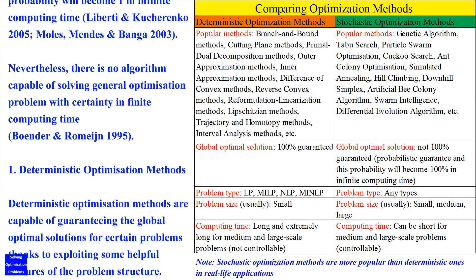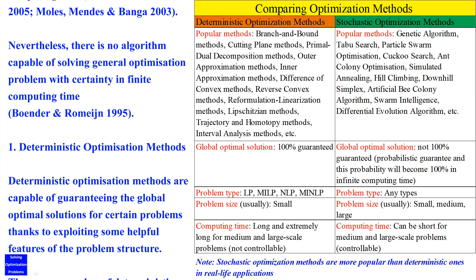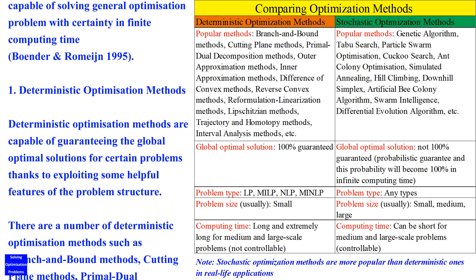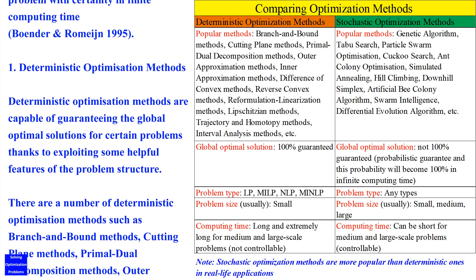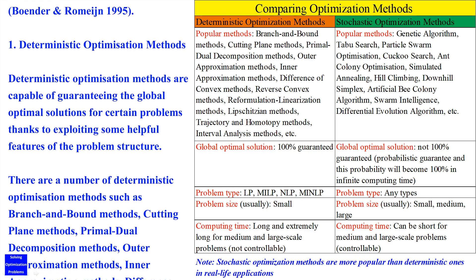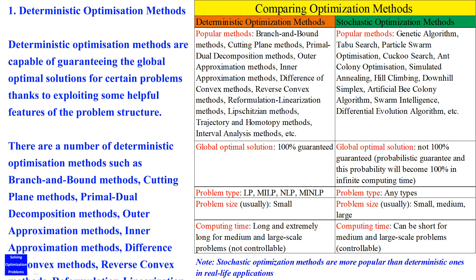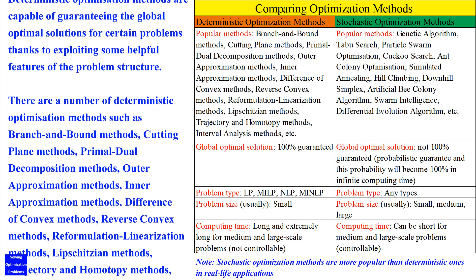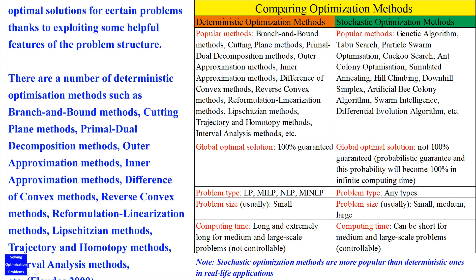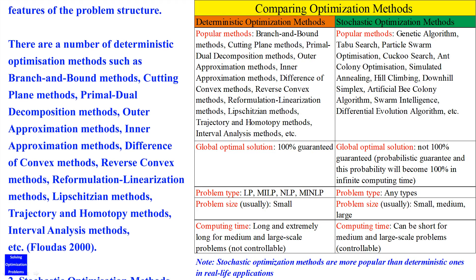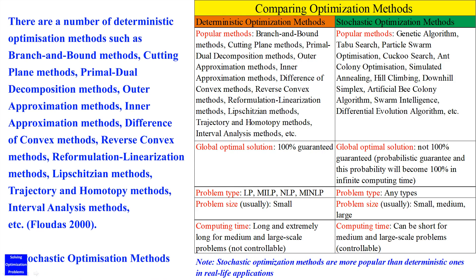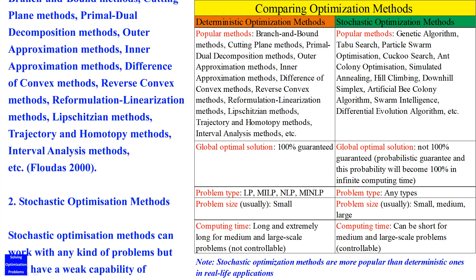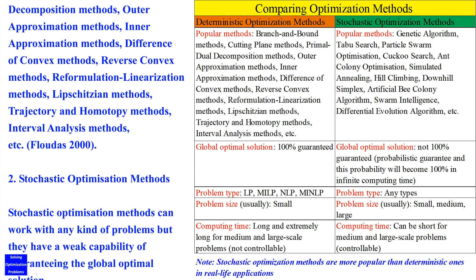Deterministic optimization methods are capable of guaranteeing the global optimal solutions for certain problems, thanks to exploiting some helpful features of the problem structure. There are a number of deterministic optimization methods such as branch and bound methods, cutting plane methods, primal dual decomposition methods, outer approximation methods, inner approximation methods, difference of convex methods, reverse convex methods, reformulation linearization methods, Lipschitzian methods, trajectory and homotopy methods, interval analysis methods, etc.